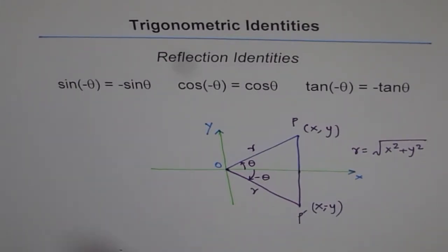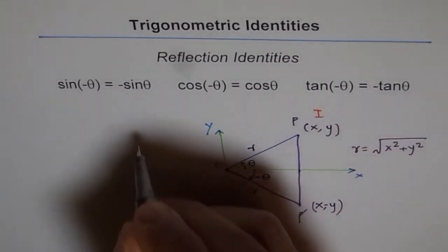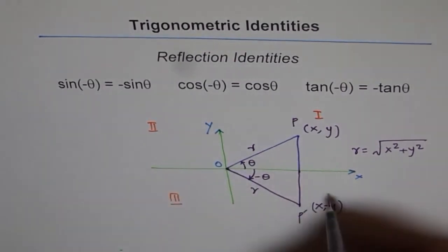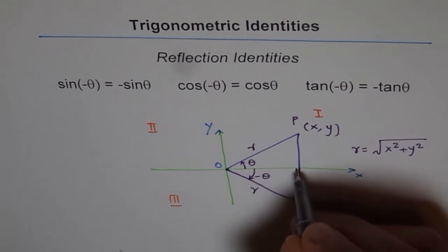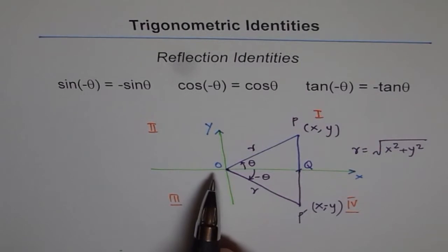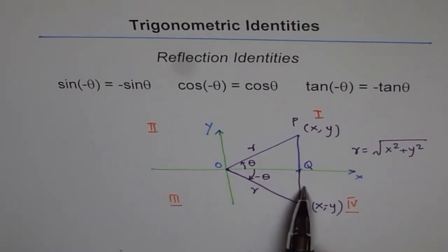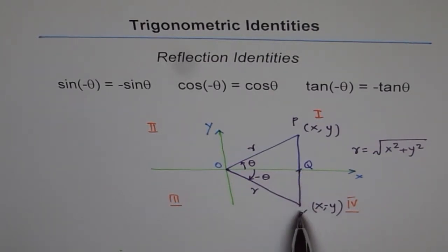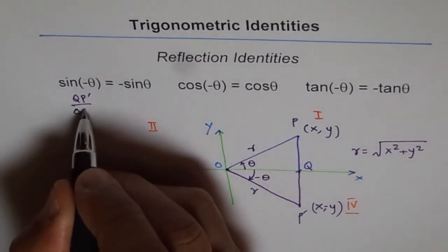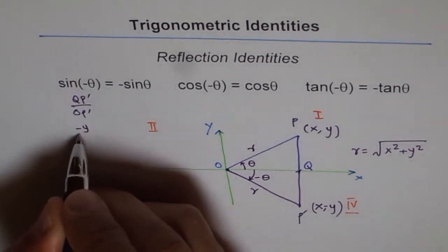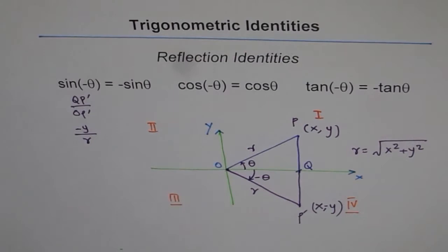What is sin of minus theta? When we say sin of minus theta, we are considering the triangle in quadrant 4 — let me label the quadrants 1, 2, 3, and 4. I am referring to the triangle in quadrant 4, and let me call that reflected point Q. Sin is opposite over hypotenuse. The opposite side here is minus y, so sin of minus theta equals QP-dash divided by OP-dash, which is minus y over R.